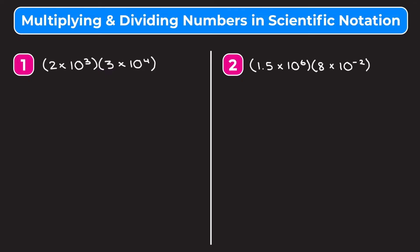The nice thing about multiplying and dividing numbers in scientific notation is that we do not need them to be multiplied by the same power of 10. We can solve this just by using the numbers we have. When we're multiplying things, the order in which we multiply does not matter. So we can rearrange it as 2 times 3 times 10 to the third times 10 to the fourth.